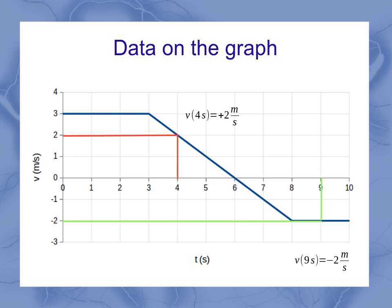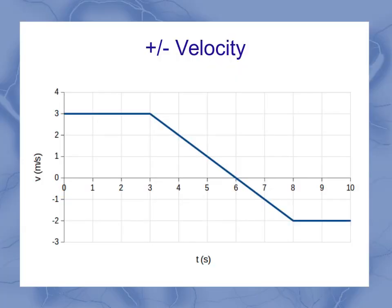So that kind of leads us into this plus and minus aspect. Any time that we have a positive number on the graph above zero, that means we've got a positive velocity, or I'm moving forward along whatever line I've defined. Negative velocities means I'm moving backwards along that same line.